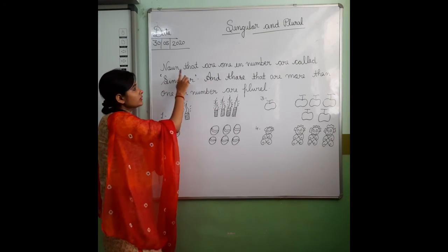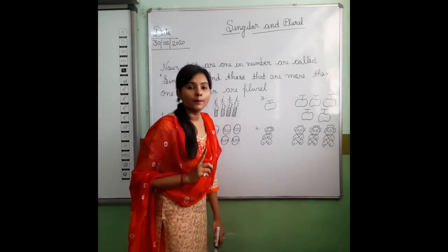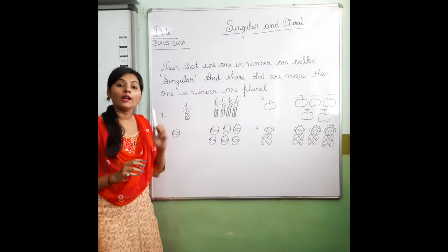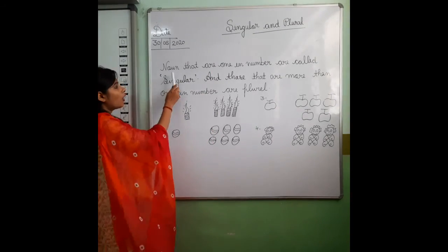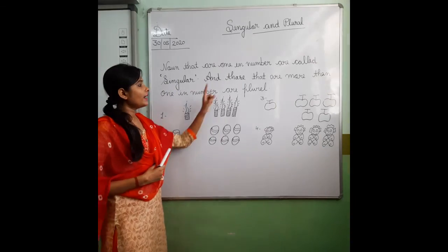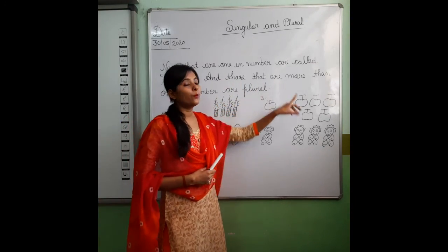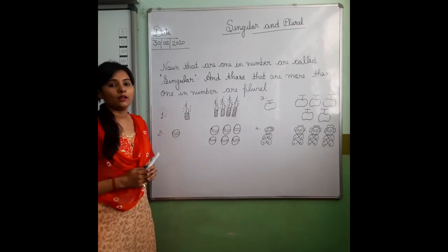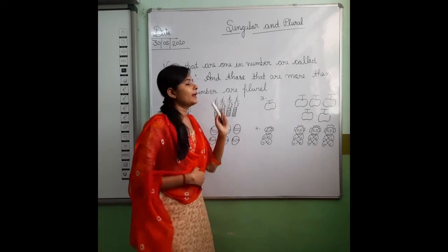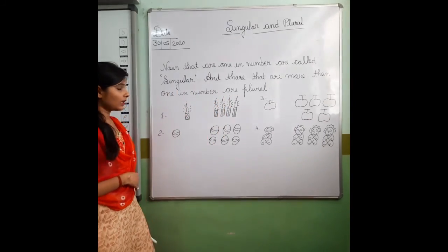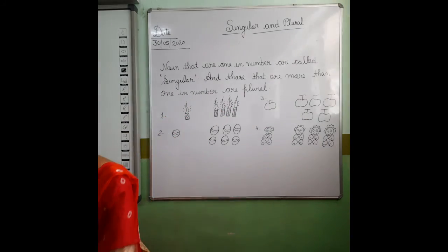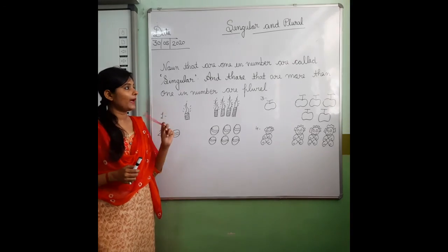Those that are one in number are called singular — single, only one. And those that are more than one in number are called plural. Like, I have a pen — a single pen.